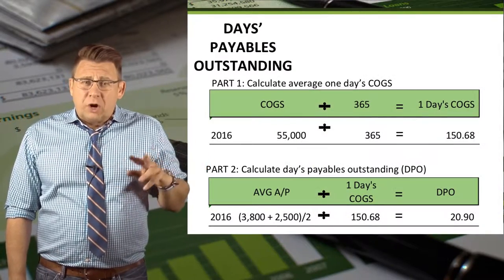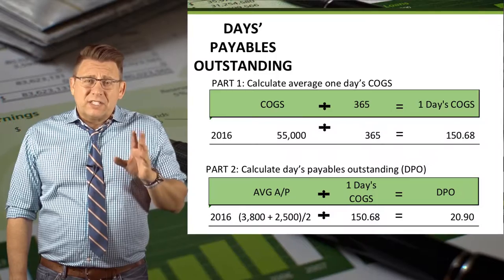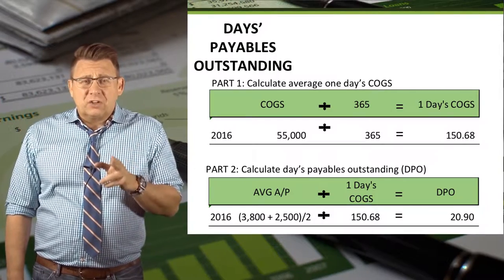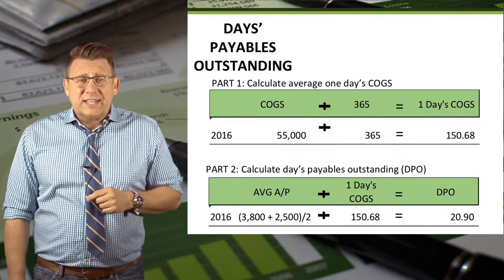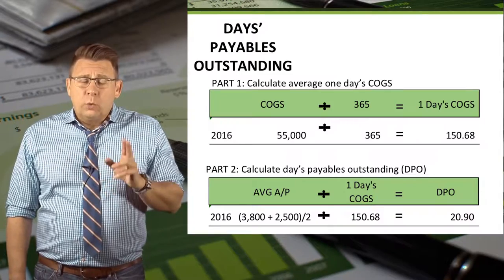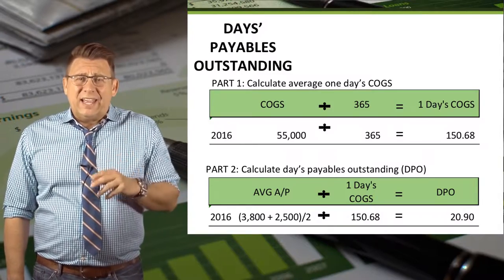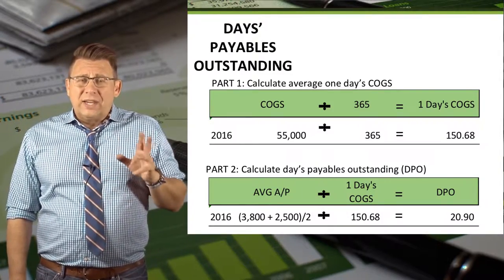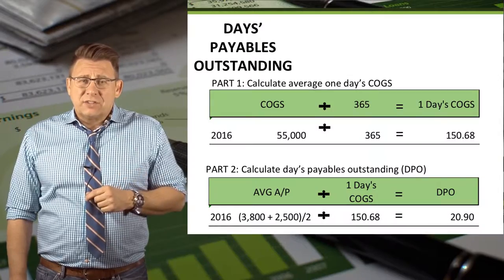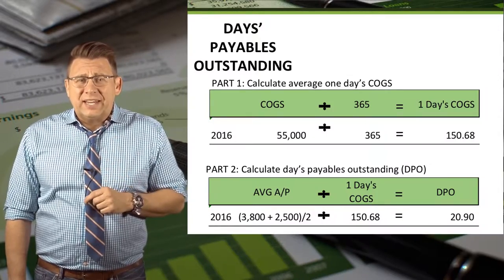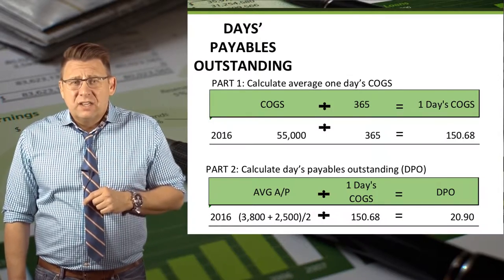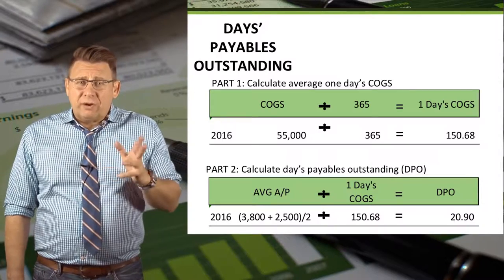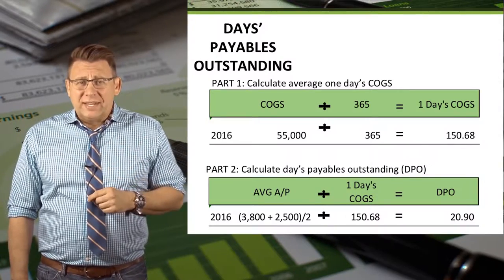For 2016, part one gives us an average one day's cost of goods sold of $150.68. In part two, we divide the average accounts payable by the one day's cost of goods sold to get 20.9 days. On average, we're paying off accounts payable about every 21 days.